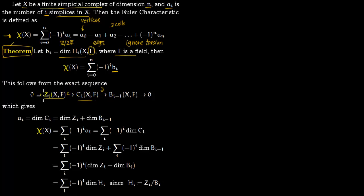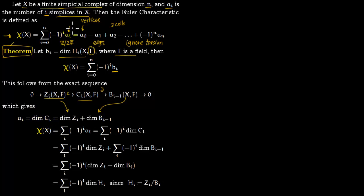You have this short exact sequence, and since you have this short exact sequence you can use the rank-nullity theorem. The dimension of C_i equals the dimension of the kernel plus the dimension of B_{i-1}. The dimension of C_i is what we are calling a_i. So a_i is the dimension of C_i, and the Euler characteristic is defined using a_i.